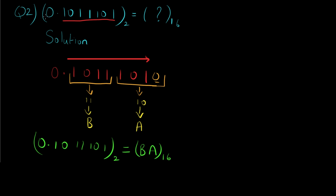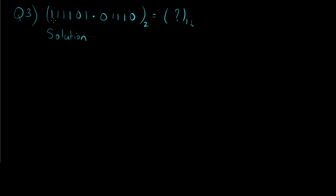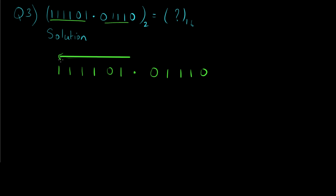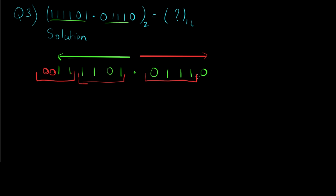Question number 3 has both an integer part and a fractional part — a combination of questions 1 and 2. For the integer part, we make pairs of 4 starting from right to left of the decimal point, and for the fractional part we start making pairs from left to right of the decimal point. For the integer part, this is the first pair and the second pair includes two additional zeros just for pairing. For the fractional part, the first pair is clear, and since only one zero remains, we add three more zeros for pairing to form the second pair.